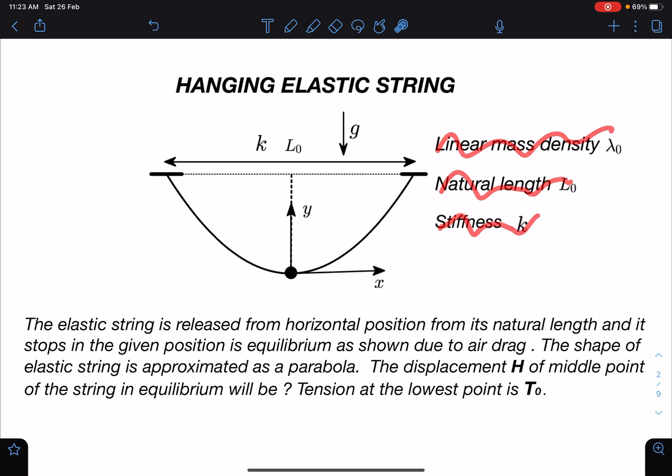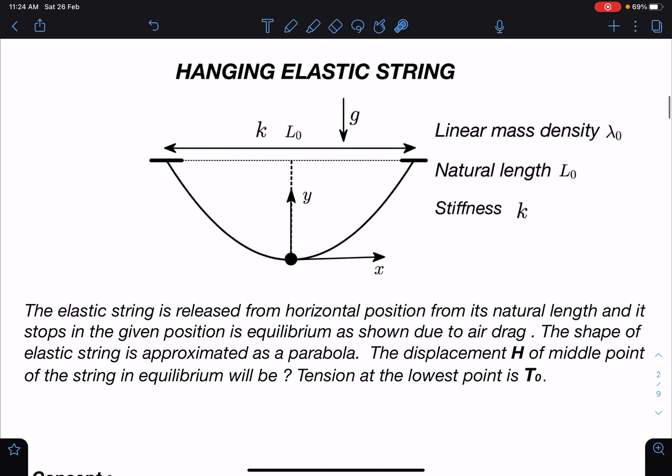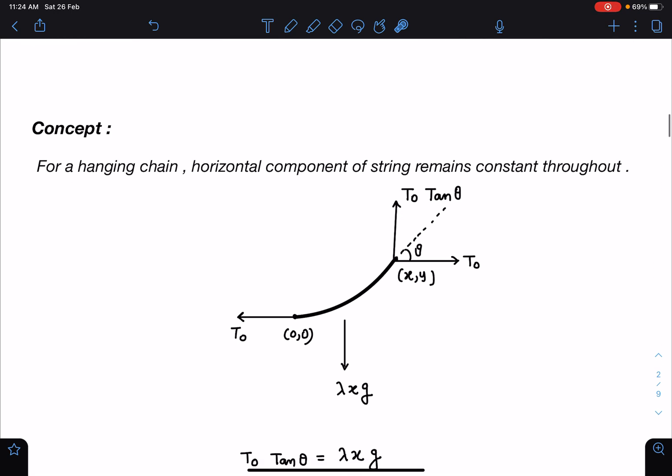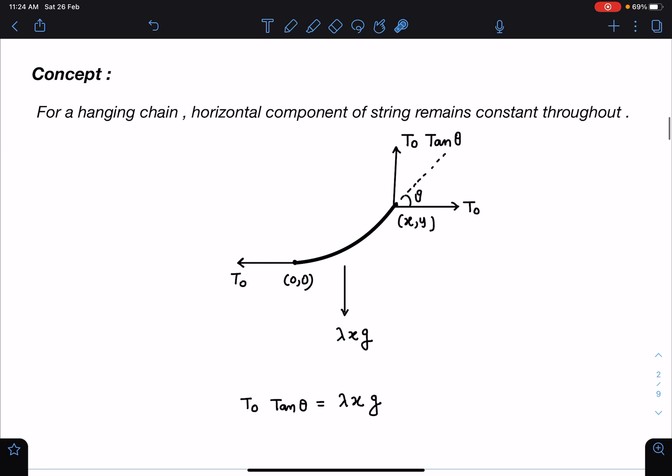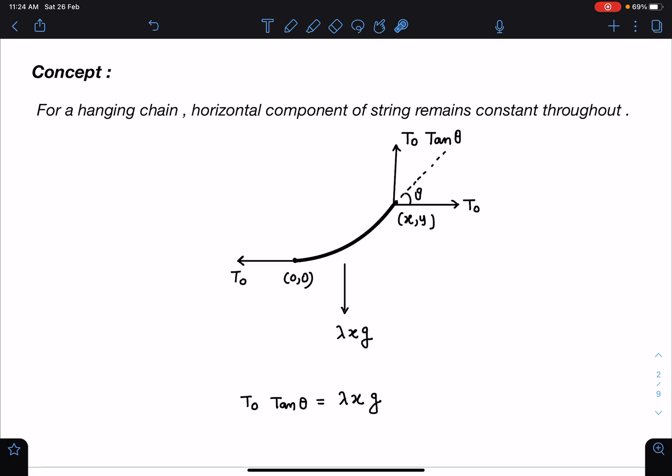Concept-wise, we can say like all other catenary and chain problems we have seen, for a hanging chain in equilibrium the horizontal component of string remains constant throughout. So let's draw from origin to general point (x, y).